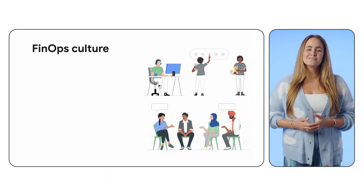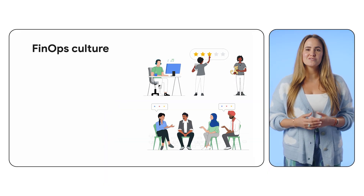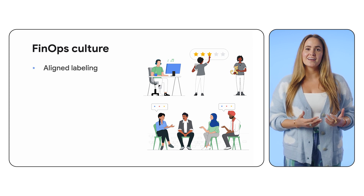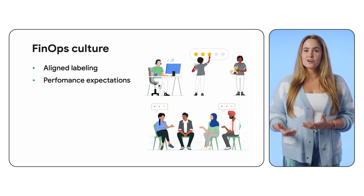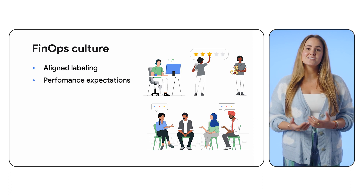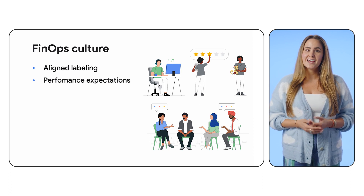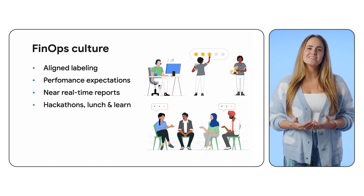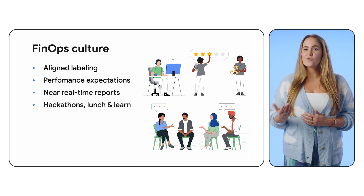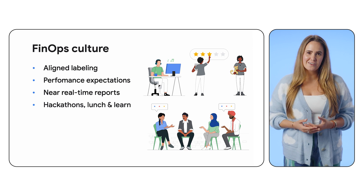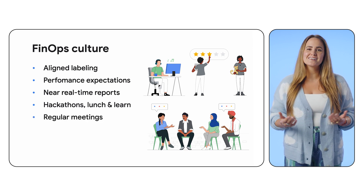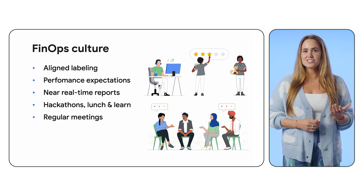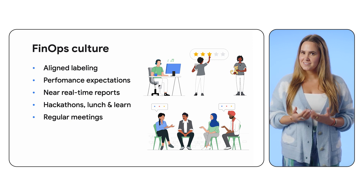To allow for this level of collaboration to make data-driven decisions, it takes cultural adjustments too. Aligning on labeling strategies and performance expectations are some ways to be more proactive in your approach and enable near real-time reporting. Our panelists spoke to lunch and learns, workshops, incentivized hackathons, and even regular meetings as powerful ways to support a culture of empowered collaboration and aligned efforts in FinOps.